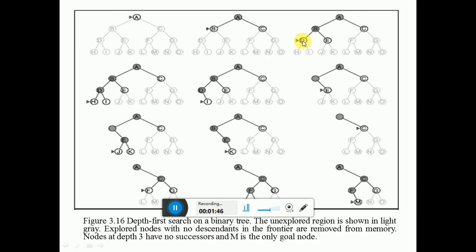Then further, D is expanded into H and I. There is no expansion from H, so we return back to D, then move towards I. There is no expansion from I also, so from I return back to D, return back to B, then move towards E.